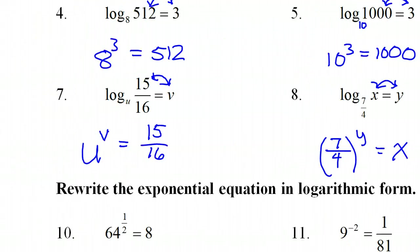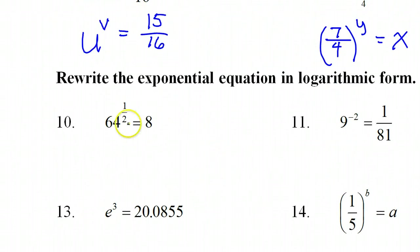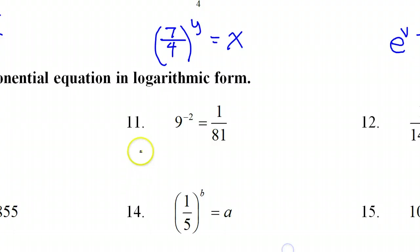We should be able to take this in the other direction as well. So here we have exponential form and we need to write logarithmic form. Once again, we will start with the base. Now, logarithmic form obviously starts with L-O-G. But then comes the base. 64 is the base. So log base 64. These two things sort of switch places. So this will be log base 64 of 8 is equal to 1 half.